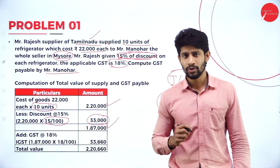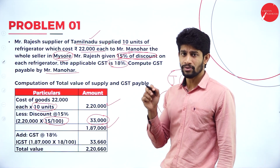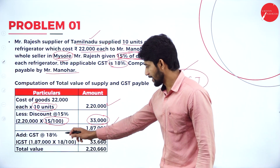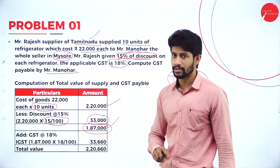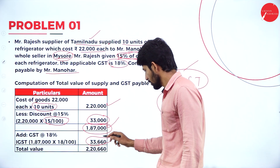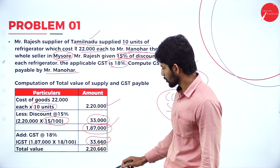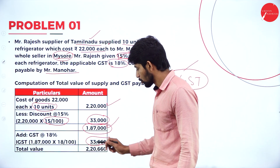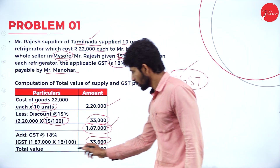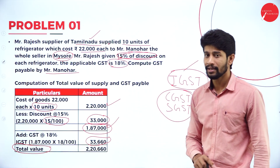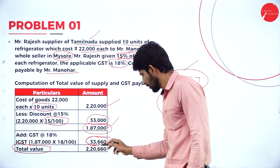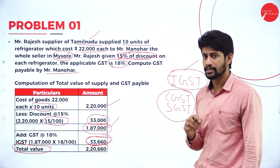In this problem, the seller is in Tamil Nadu and the buyer is in Mysore, that is in Karnataka. So between two states, IGST is applicable. Compute IGST at 18% on 1,87,000 — you will get 33,660. Add this tax value with 1,87,000, you will get the total of 2,20,660. This is the total value of supply made by Mr. Rajesh to Mr. Manohar. The GST payable is 33,660.